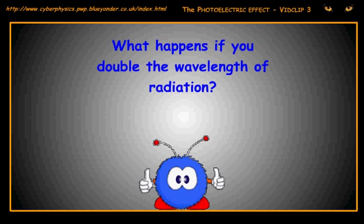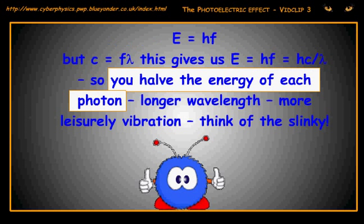What happens if you double the wavelength of the radiation? Well, E equals HF. But as C equals F lambda, this means that E equals HC divided by lambda. So you halve the energy of each photon by doubling the wavelengths. Longer wavelengths, more leisurely vibration.